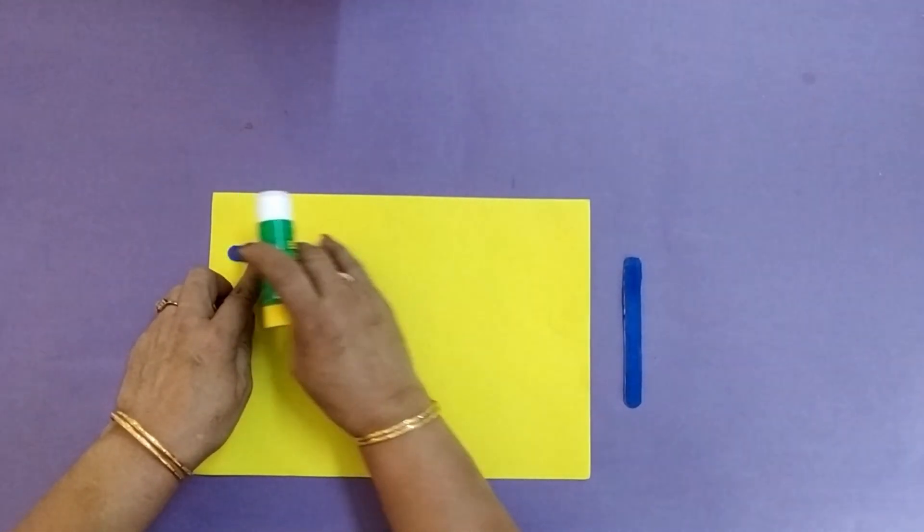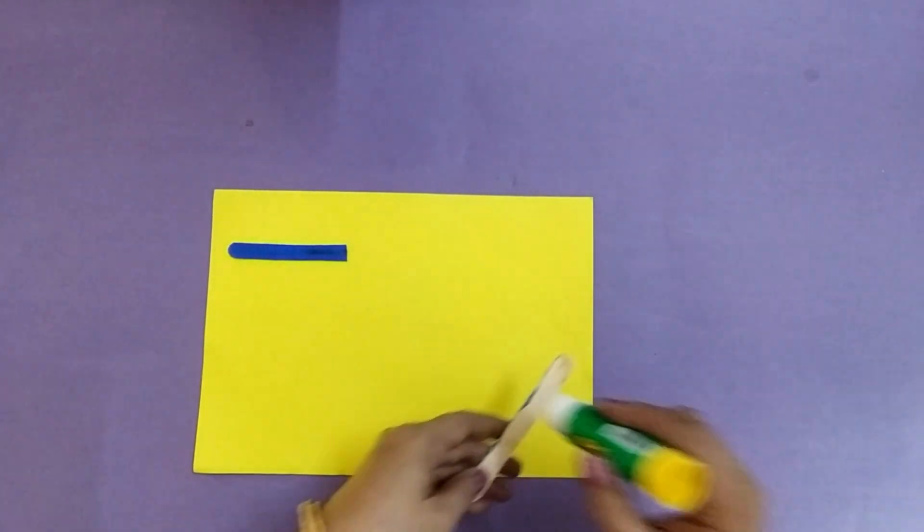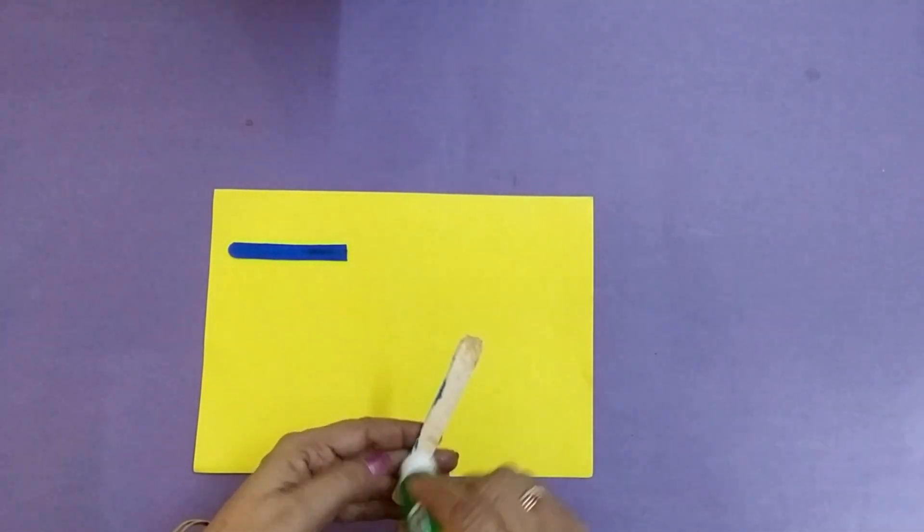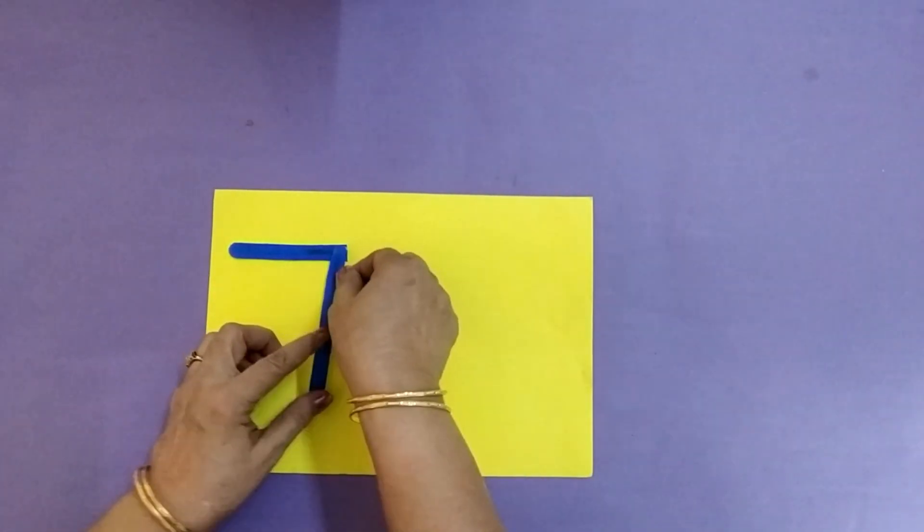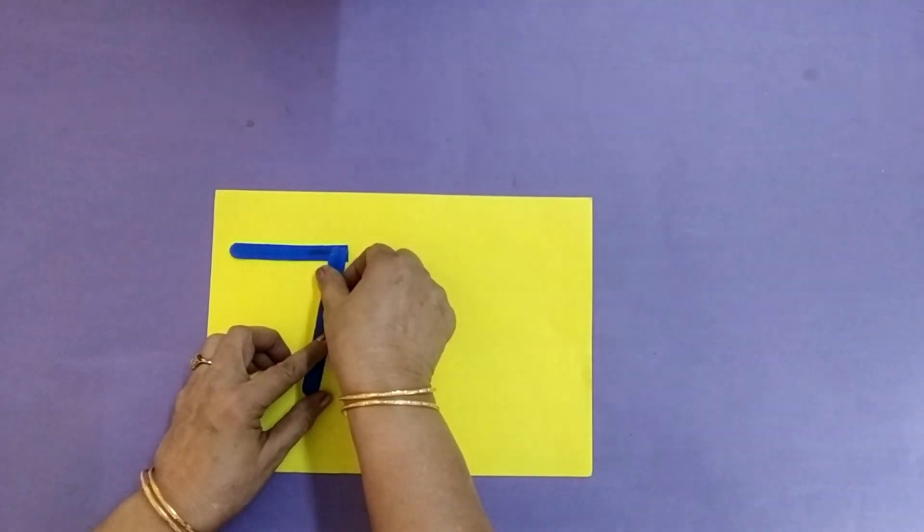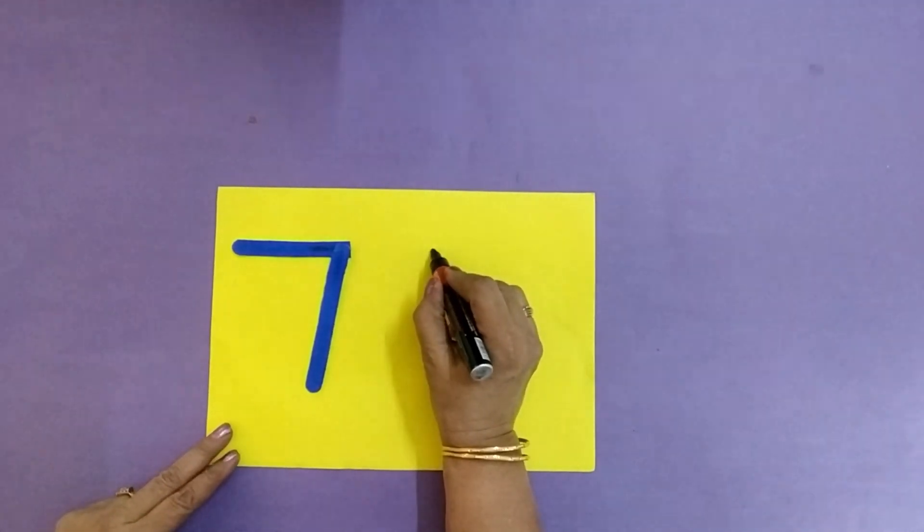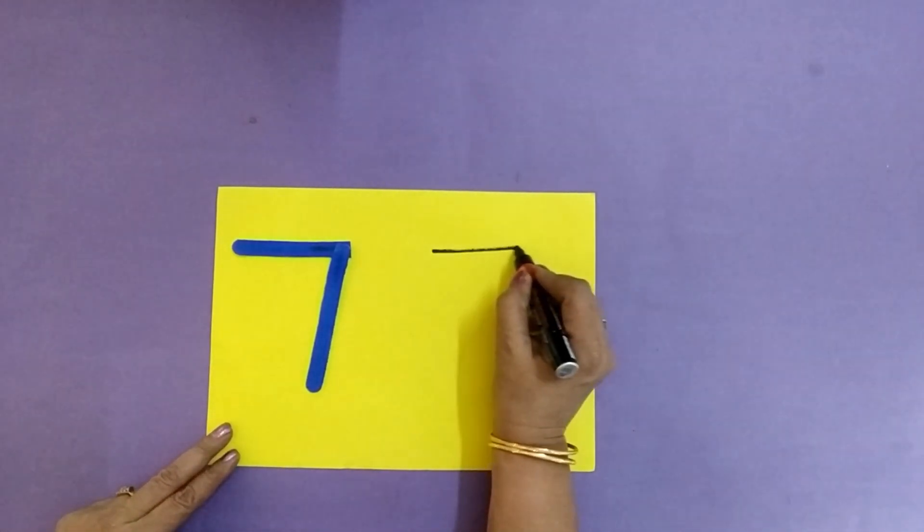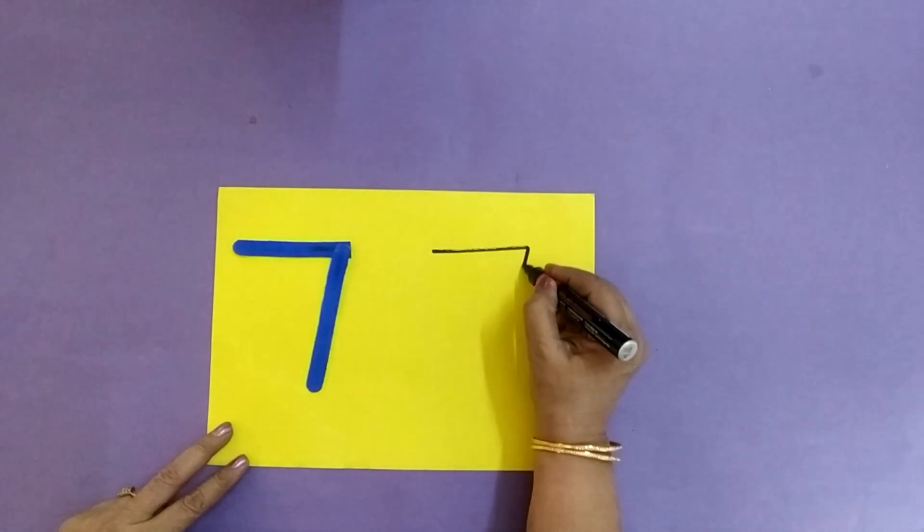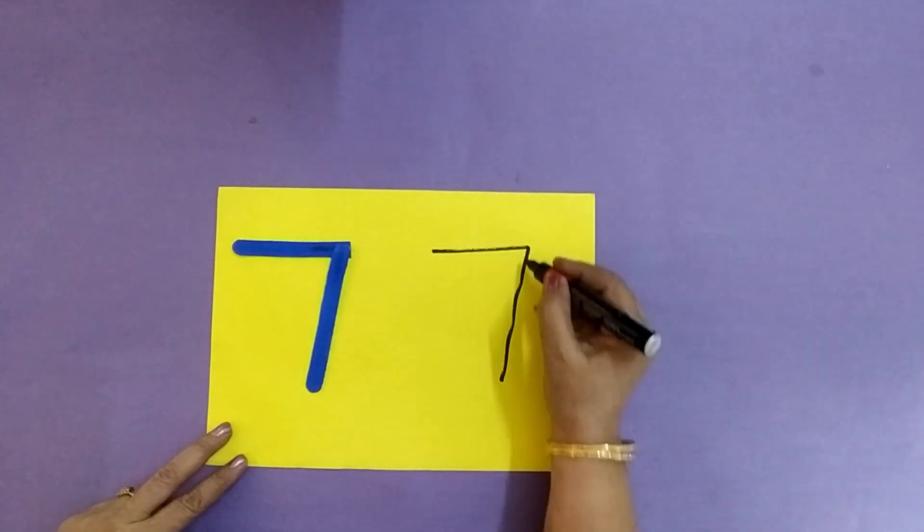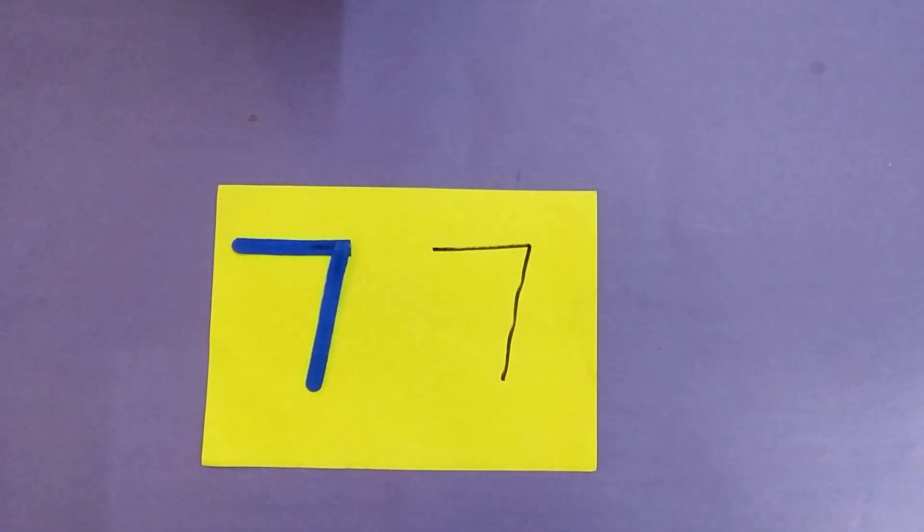One sleeping line and one slanting line. This is number seven. This is number seven. One sleeping line and one slanting line. This is number seven. Number seven.